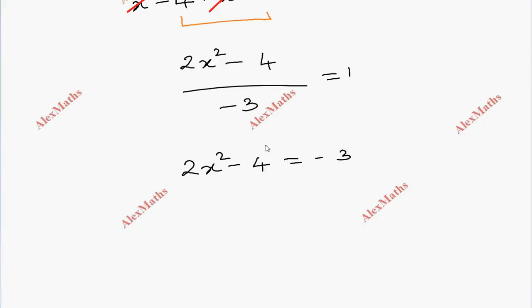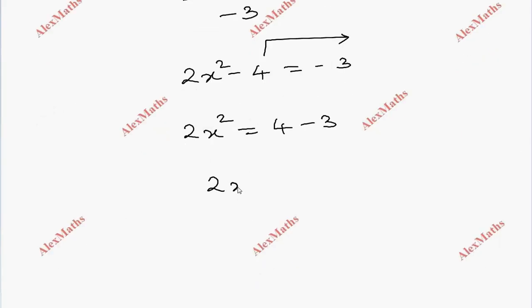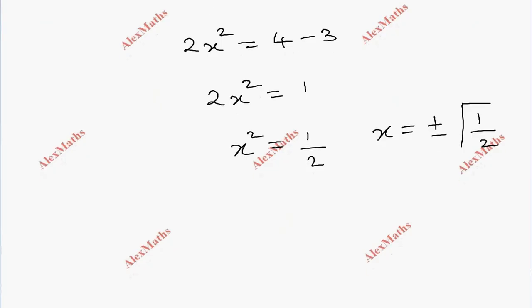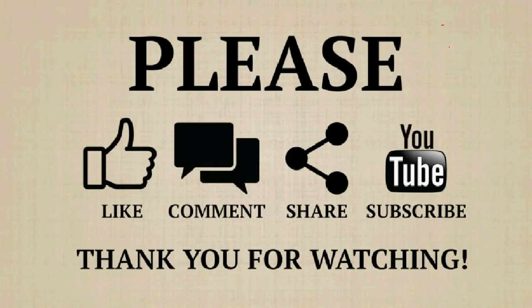This means 2x squared minus 4 divided by minus 4 plus 1, which is minus 3, equals 1. Cross multiplying: 2x squared minus 4 equals minus 3. So 2x squared equals 1, meaning x squared equals 1 by 2. Therefore x equals plus or minus 1 by root 2.